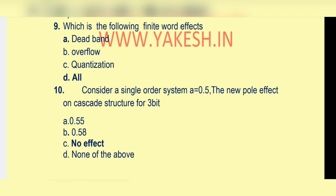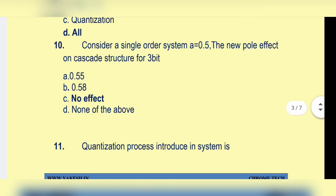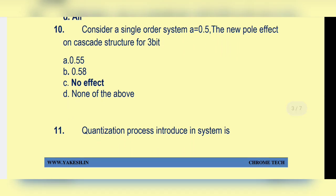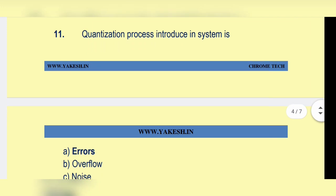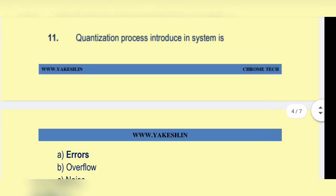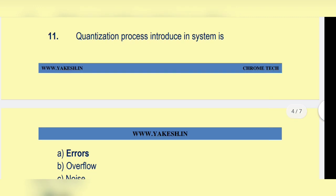Dead band, overflow, and quantization. Consider a single order system with a equal to 0.5 — the new pole effect on cascade structure for three bits. Option c: no effect. Quantization process introduced in the system is option a: errors.